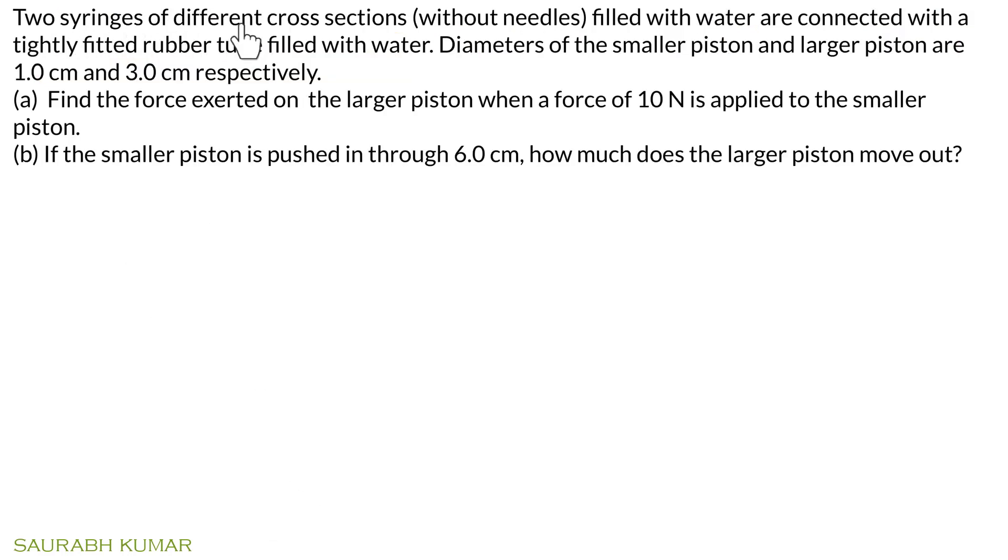Two syringes of different cross-sections filled with water are connected with a tightly fitted rubber tube filled with water. Diameters of the smaller piston and larger piston are 1 cm and 3 cm respectively. Part (a): Find the force exerted on the larger piston when a force of 10 Newtons is applied to the smaller piston.